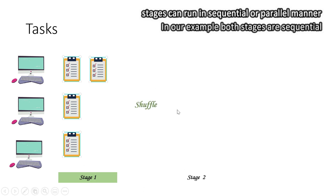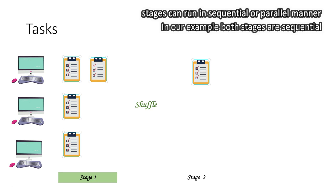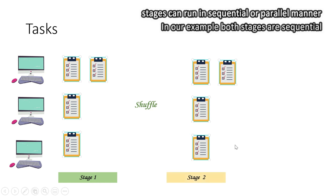After Stage 1 completes, a shuffle happens if needed. In our case, Stage 2 starts with a group by, which requires a shuffle across the network — that cannot be avoided. After the shuffle, Stage 2 tasks start executing the group by, map values, and collect operations. Similarly, if Stage 2 has four tasks and three executors, three run first and the fourth follows. Stages are pipelined sequentially, but within a stage tasks run in parallel.